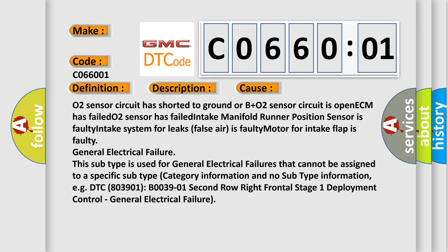General electrical failure. This subtype is used for general electrical failures that cannot be assigned to a specific subtype category information and no subtype information, e.g. DTC B03901: B003901 2nd row right frontal stage 1 deployment control, general electrical failure.